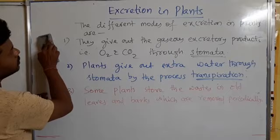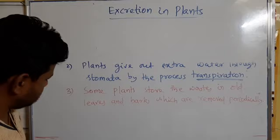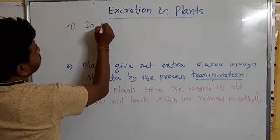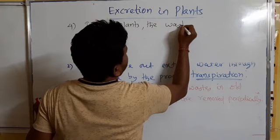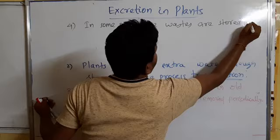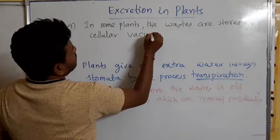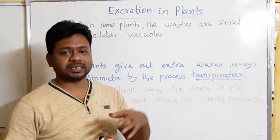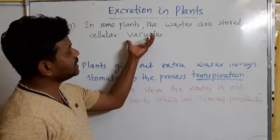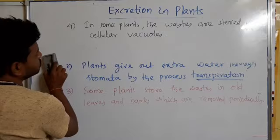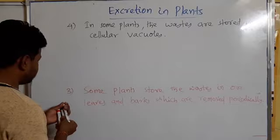In some plants, the waste is stored in cellular vacuoles. If you see the structure of a plant cell, there is a large central vacuole present. The vacuole is a storehouse of the plant cell. So inside the vacuoles they can also store the waste — in some cases, the waste is stored in the vacuoles.